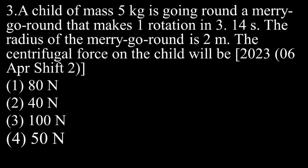A child of mass 5 kg is going around a merry-go-round that makes one rotation in 3.14 seconds. The radius of the merry-go-round is 2 meters. The centrifugal force on the child will be.